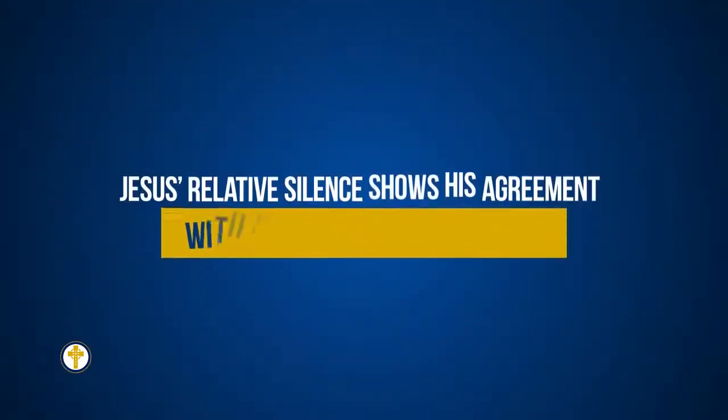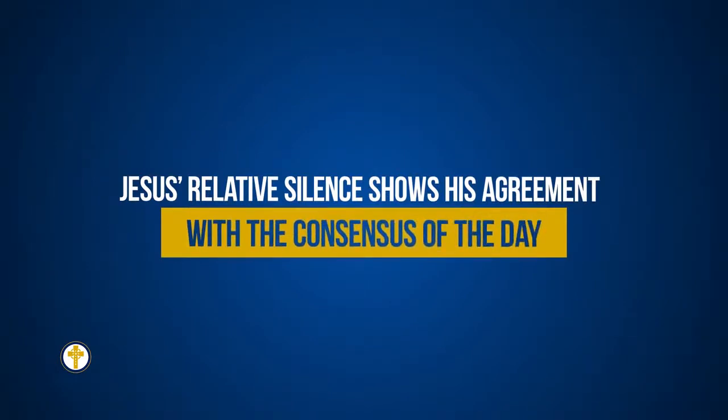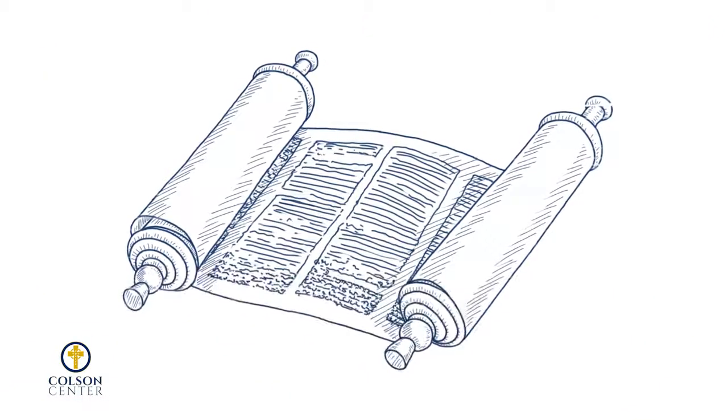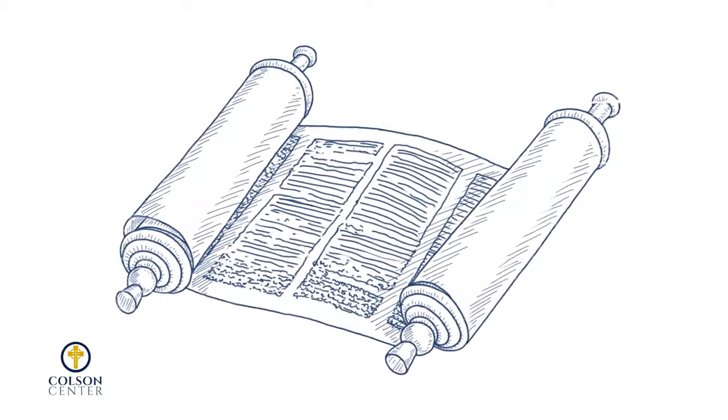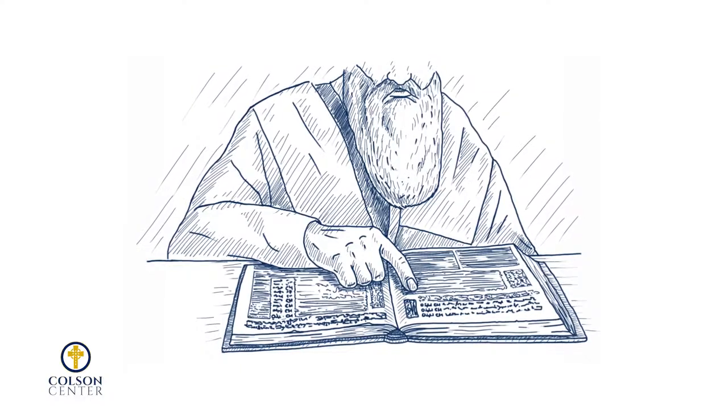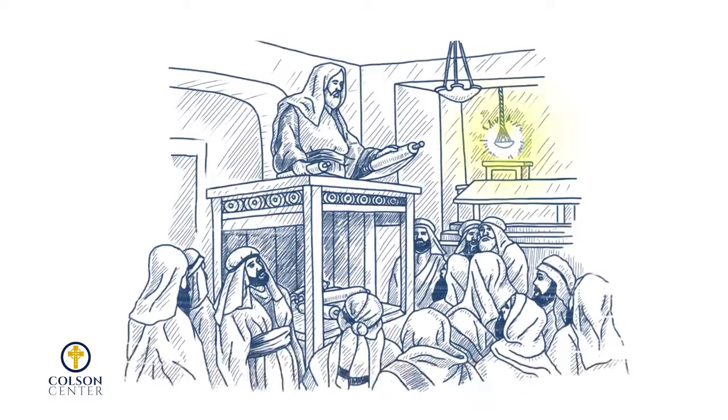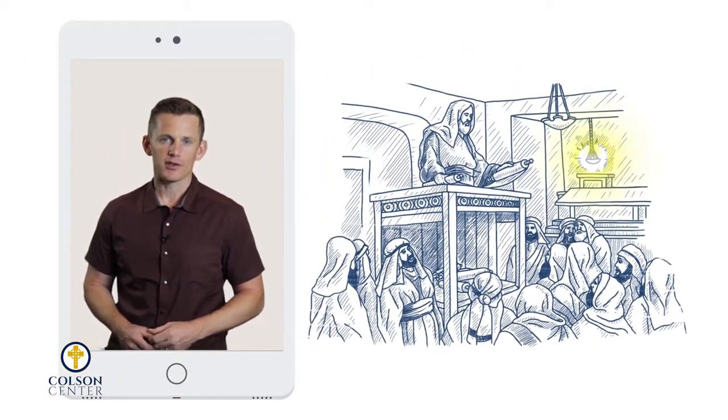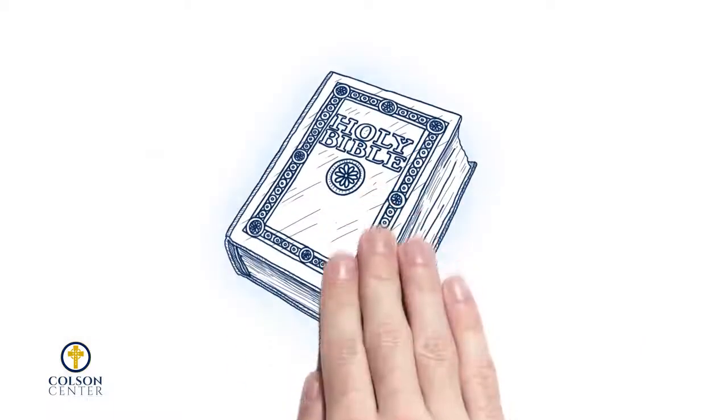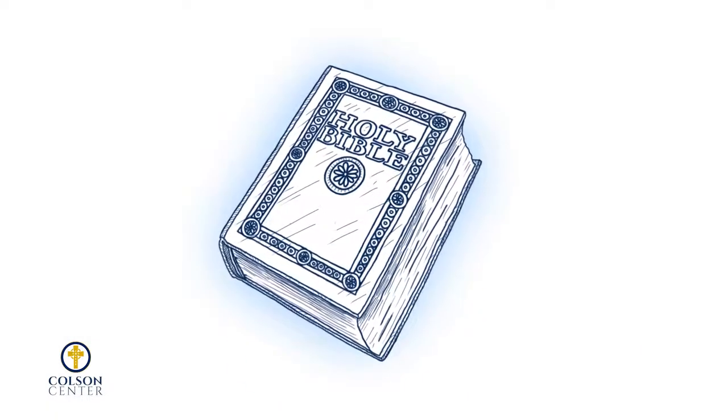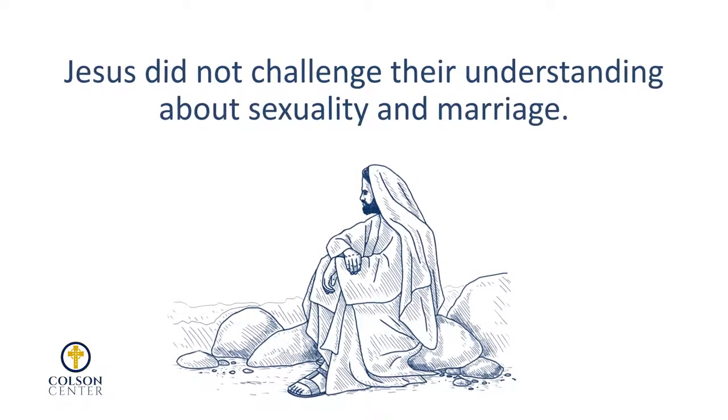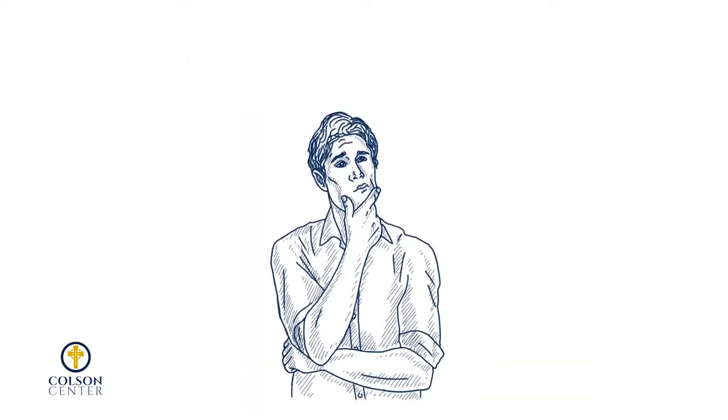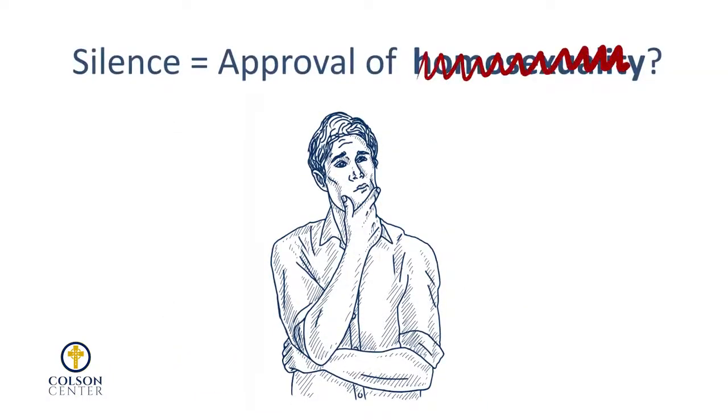Fourth, Jesus' relative silence shows His agreement with the consensus of the day. In first-century Israel, it was universally recognized that homosexuality was sin. Every extra-biblical source confirms this. Throughout His earthly ministry, Jesus went out of His way to confront and correct misunderstandings about the law, like He did with rules about the Sabbath. When religious rules were in conflict with God's design, He was not hesitant to say so. But Jesus did not challenge their understanding about sexuality and marriage. So His silence is more reasonably understood, not as an endorsement of homosexuality, but as agreement with the consensus of the day.